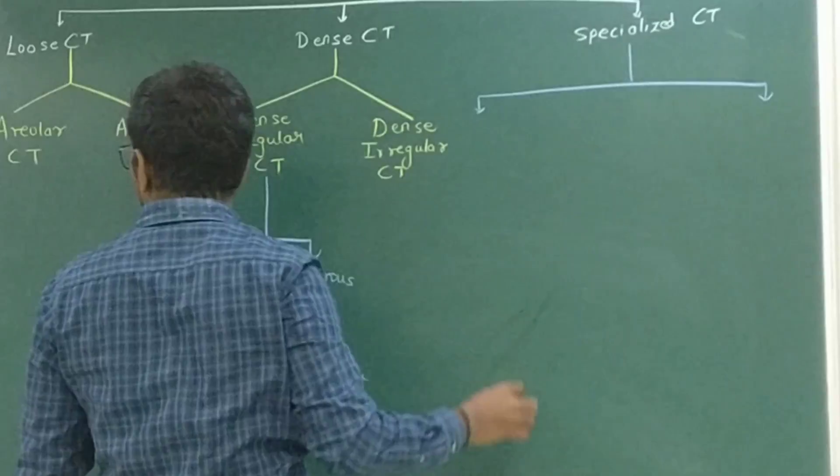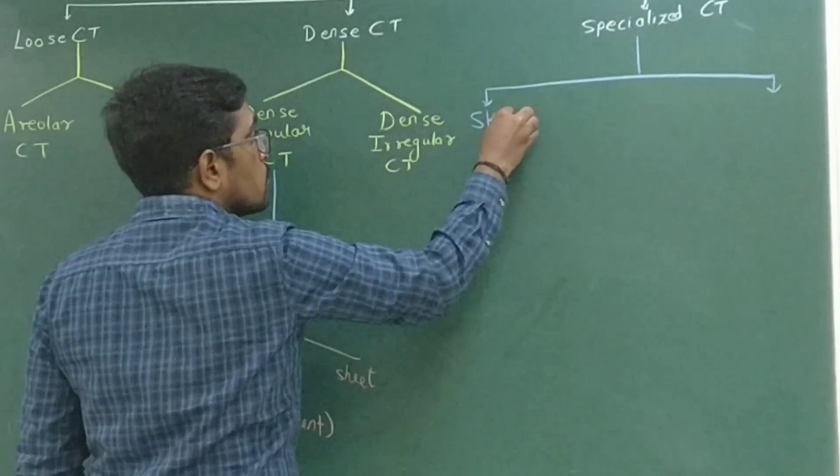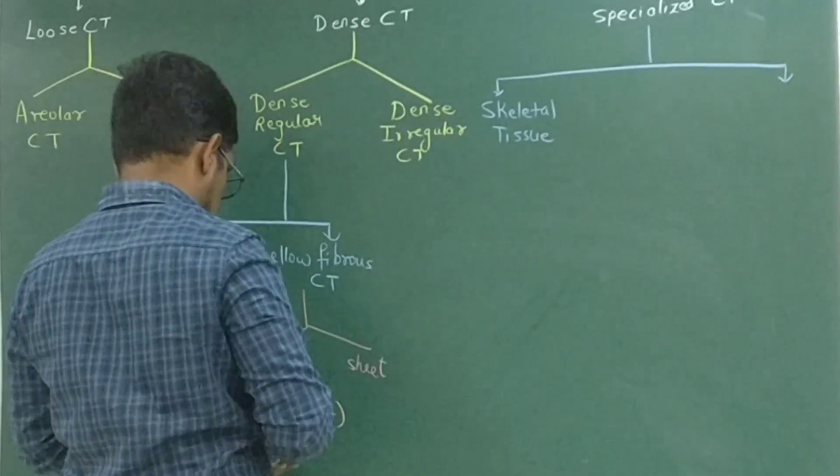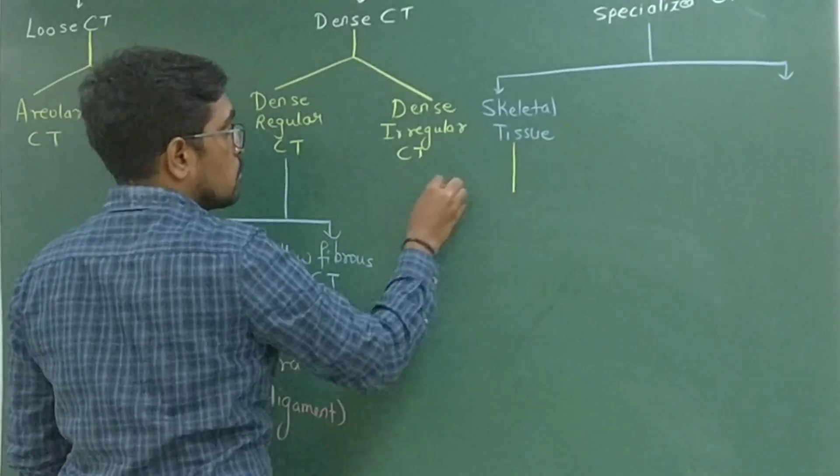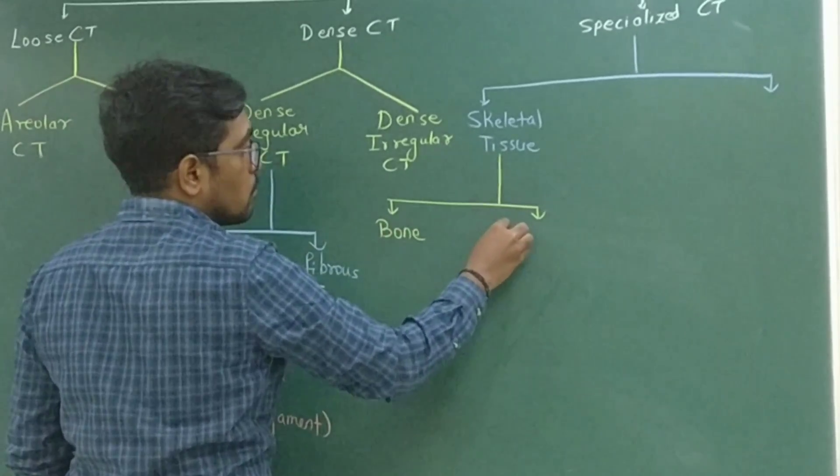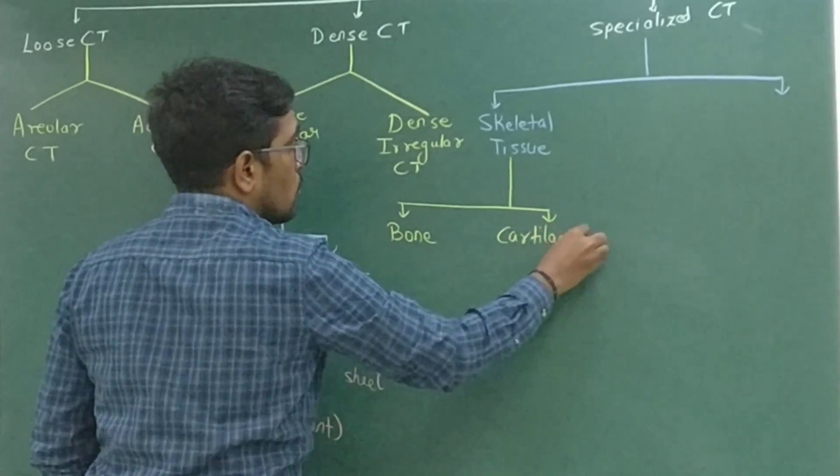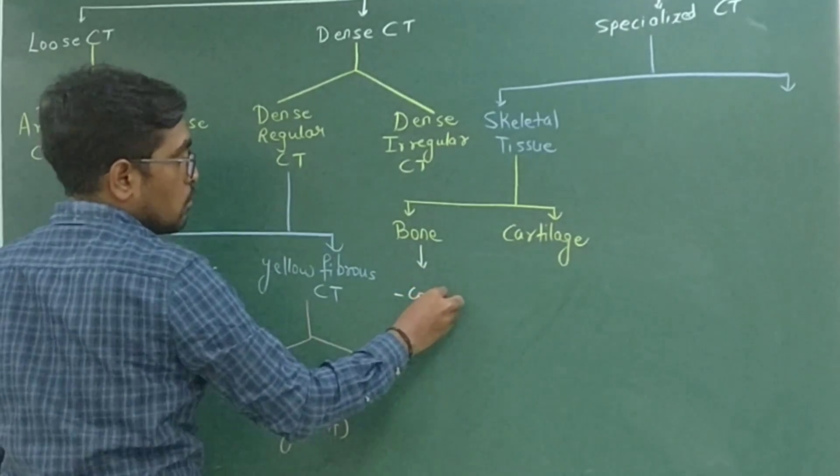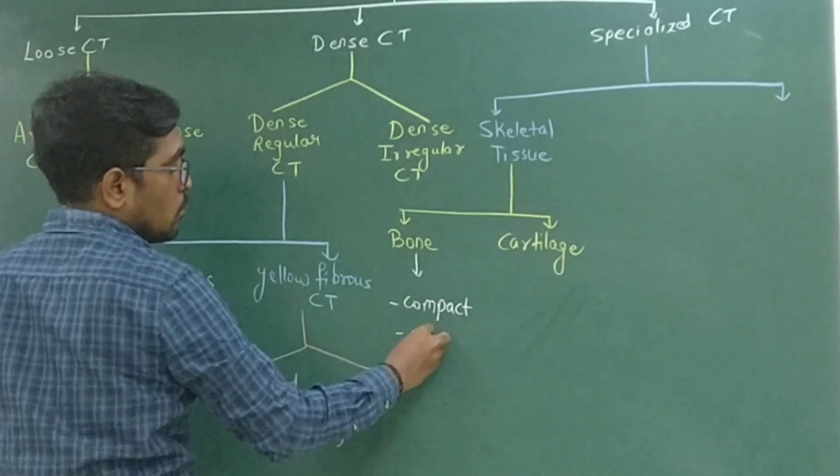Specialized connective tissue includes two major parts. One we call skeletal tissue and the other is called specialized tissue. Skeletal tissue includes two things: one is the bone and second is the cartilage. When I talk about bone, bone is further divided into two types: compact bone and spongy bone.